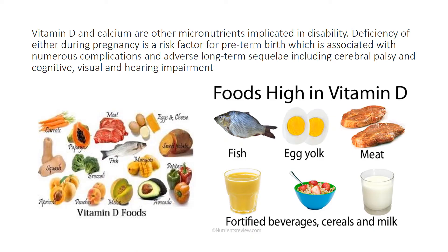Vitamin D and calcium are other micronutrients implicated in disability. Almost every day there is a new paper reporting the importance of vitamin D and its correlation with disorders like Alzheimer's, autism, and developmental delay. Deficiency of either during pregnancy is a risk factor for preterm birth and causes long-term complications including cerebral palsy, cognitive, visual, and hearing impairments. Foods high in vitamin D include fish, egg yolk, meat, fortified beverages, cereals, and milk.